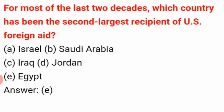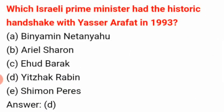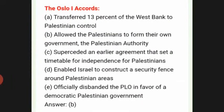The answer is E: Egypt. Which Israeli Prime Minister had the historic handshake with Yasser Arafat in 1993? The answer is D: Yitzhak Rabin. The Oslo I Accords: the answer is B, it allowed the Palestinians to form their own government — the Palestinian Authority.